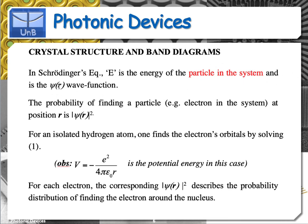Psi of r, where r is the position — which in Cartesian coordinates could be x, y, z, or in spherical coordinates could be r, theta, and phi — is the wave function. The wave function is a function such that you can get from it the probability of finding the electron at position r. If you take the absolute value of psi, the absolute value of the wave function, and square it, this quantity is the probability density of finding the electron at position r in space.